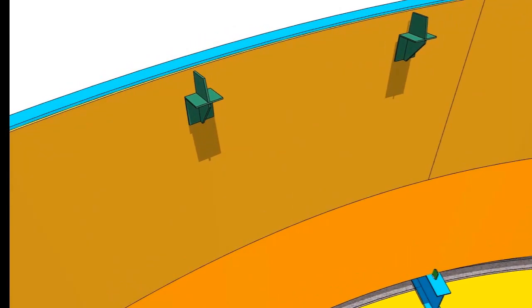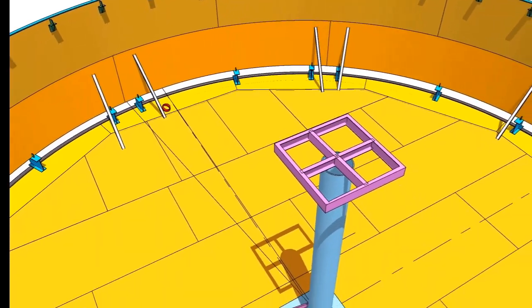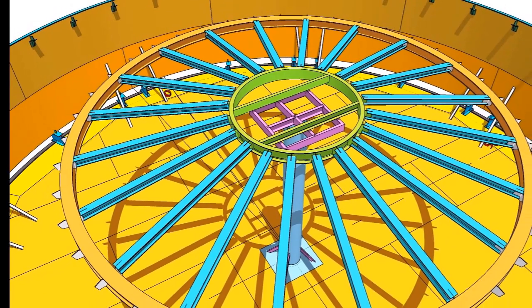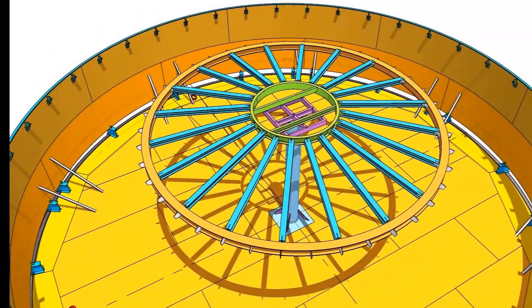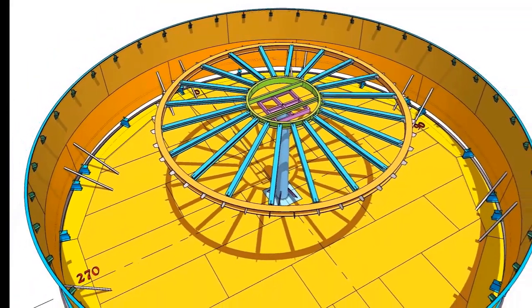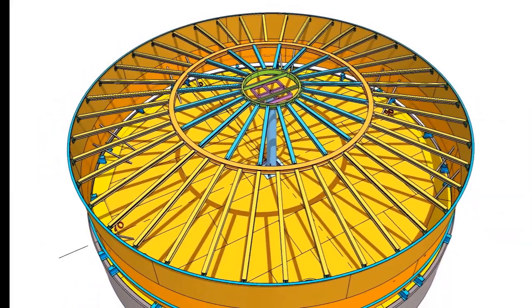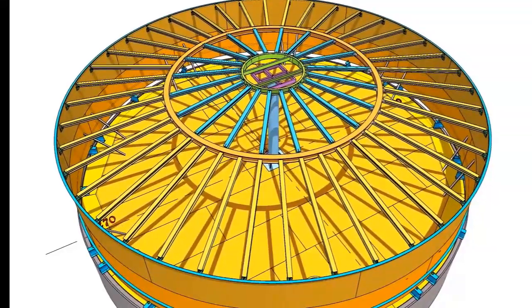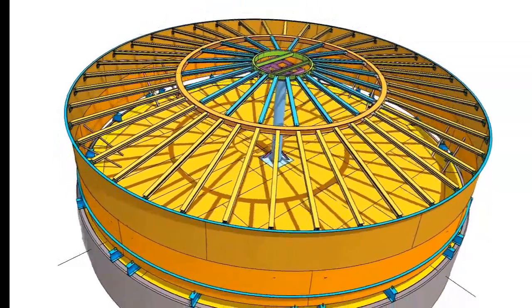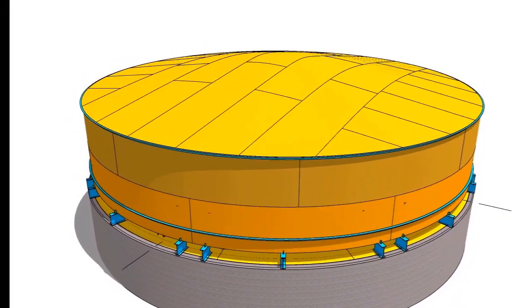Install the curb angle and the roof structure chairs. Install a temporary support on the center of the tank to erect the center drum. Erect the preassembled center drum and middle rafters on the support. Install the outer rafters and complete the roof structure. Complete the welding of the curb angle from inside and outside. Complete the welding of the roof structure.